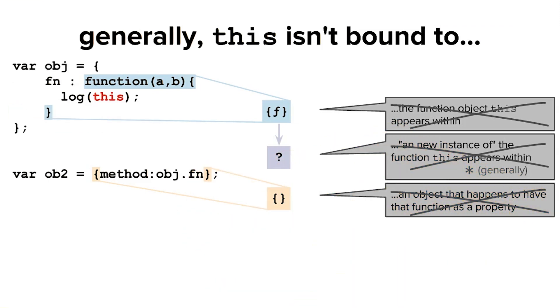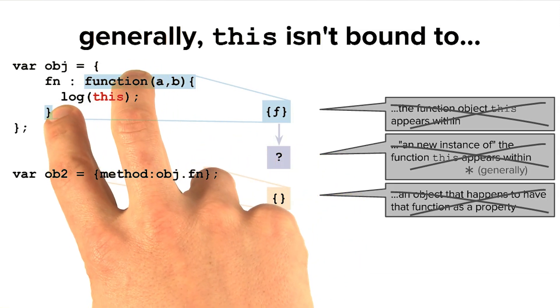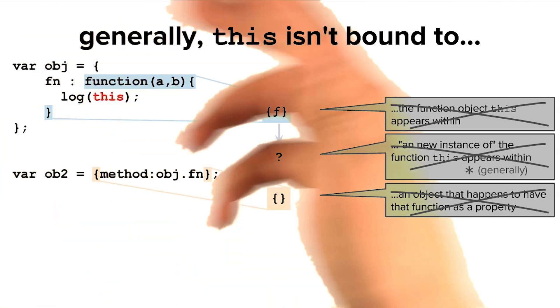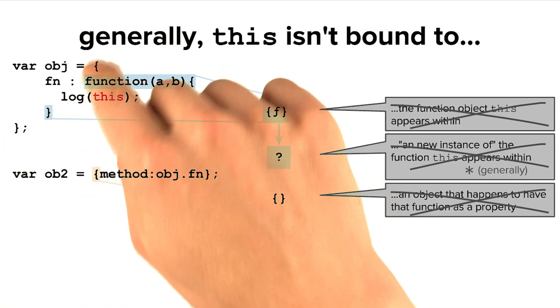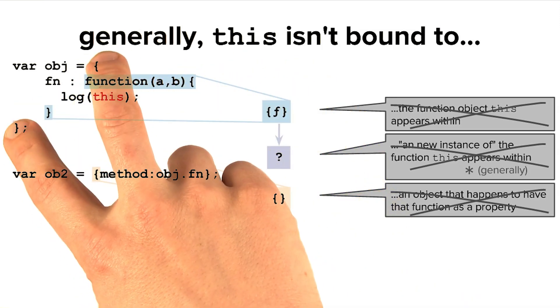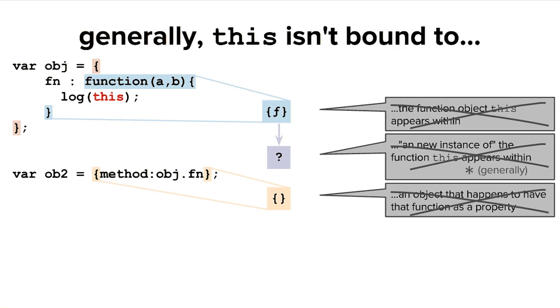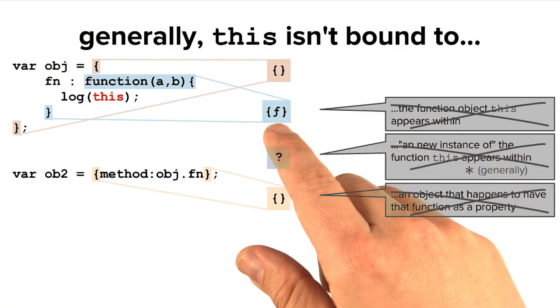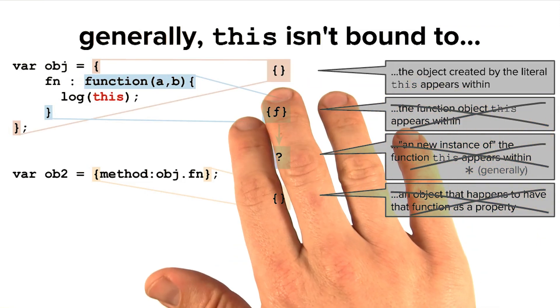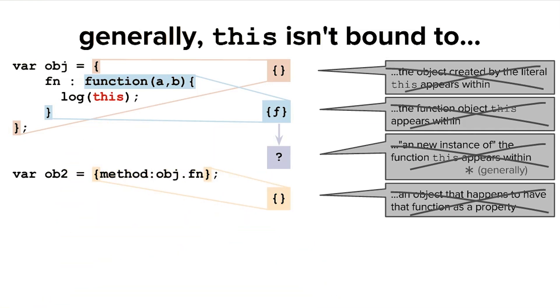Taking it a step further, we could then claim that the keyword this will appear inside a function, and that function must appear inside the curly braces of some object literal or some other form of defining a function. So that object literal that surrounds the function definition might create an in-memory object, and that could be what we're referring to when we say the keyword this. But this is also not correct.